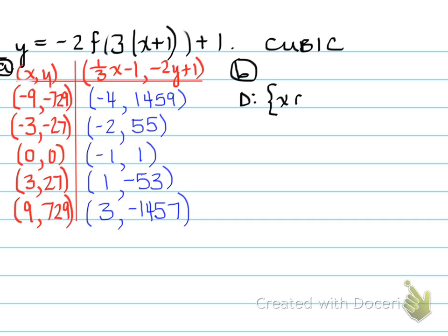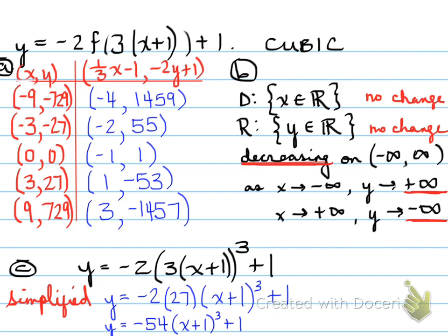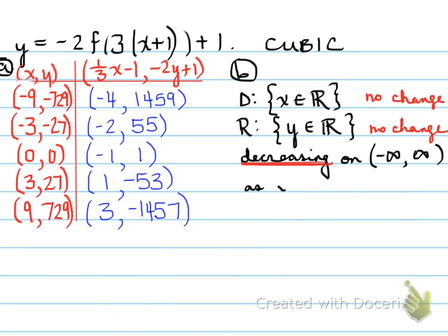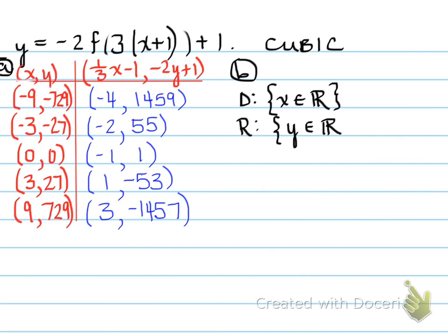Now, part b says describe the domain and range. In a cubic function, the domain is x belongs to real or x goes from negative infinity to positive infinity. The range goes from y belongs to real as well, negative infinity to positive infinity. How does that apply from the original to the new one? Well, they don't change. The domain and range here does not change from the original.